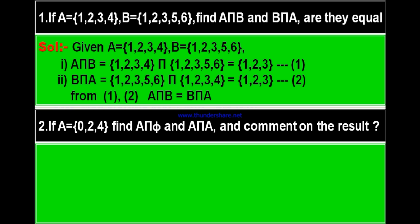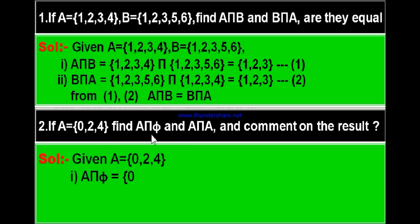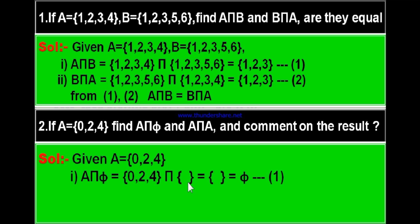Here is the solution. We have given that set A is {0, 2, 4}. We have to find A intersection ∅ first. A intersection ∅ means A = {0, 2, 4} intersection the empty set. Since there are no elements in the second set, there is no question of common elements. Therefore the intersection is an empty set only, which equals ∅.